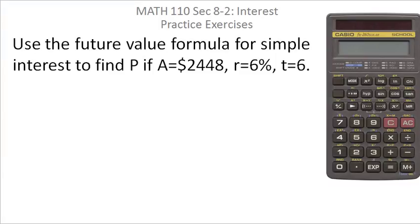Use the future value formula for simple interest to find capital P, the principal or present value. If capital A, the future value or accumulated value, is $2,448, the annual interest rate is 6%, and the time is 6 years.